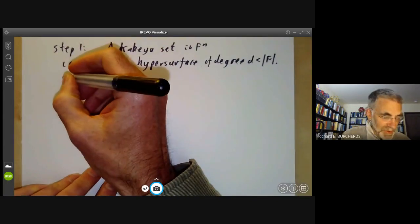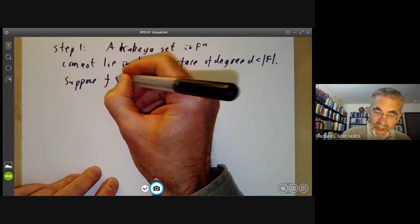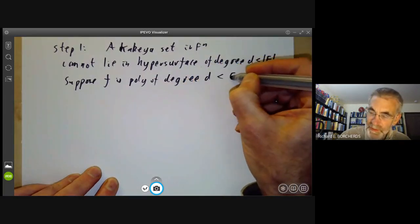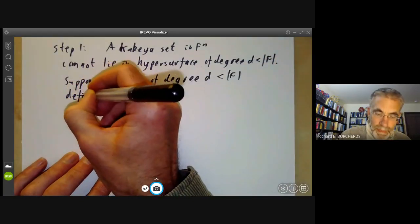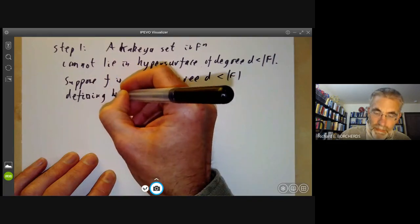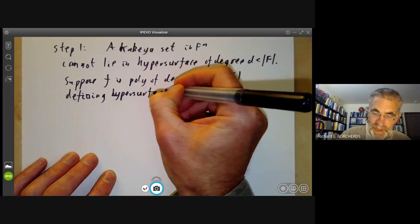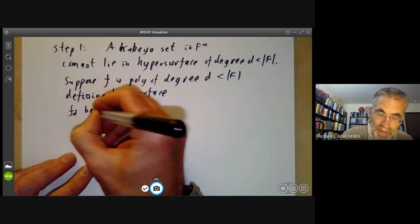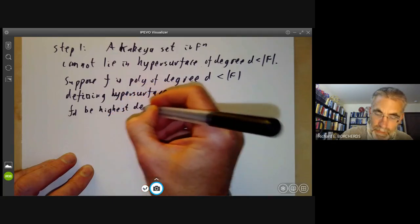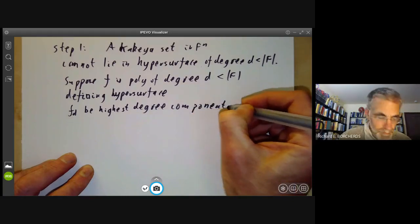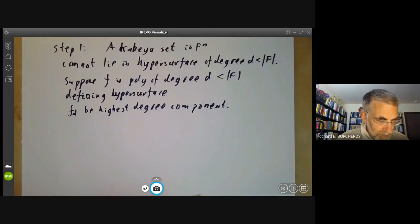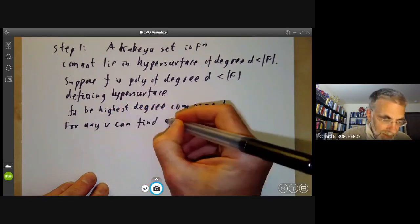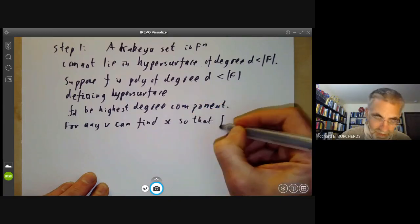Well, the proof of this is fairly short. Suppose f is a polynomial of degree d which is less than the order of f defining some hypersurface which is a Kakiya set. And then let f_d be the highest degree component. For every direction v, we can find x so that f of x plus vt vanishes for all t.